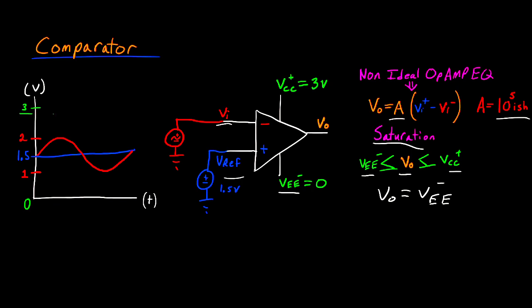So this is our 3-volt upper limit, and this is the maximum value that the op-amp can output. And down here we have our lower limit, and this is going to be the minimum value that our op-amp can output.